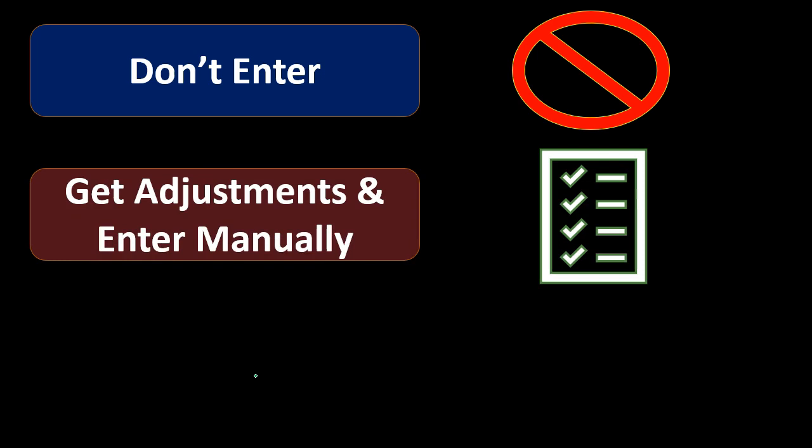Our next option is to get the adjusting entries and enter them manually. It would be nice if we work with an accounting firm that would just give us those adjusting entries from their adjusting entry worksheet. If they don't use QuickBooks and they use some other system like Excel, they can print out those adjusting entries — they're just going to be journal entries no matter what system is used — and we could take that information and enter it into our system.